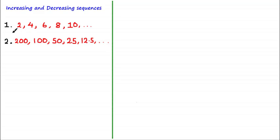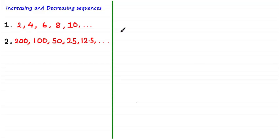You should be able to see that the first sequence is an increasing sequence, and this is because the next term is greater than the previous term. So 4 is greater than 2, 6 is greater than 4, 8 is greater than 6, and so on. You can see numerically that the behavior of this sequence is increasing.